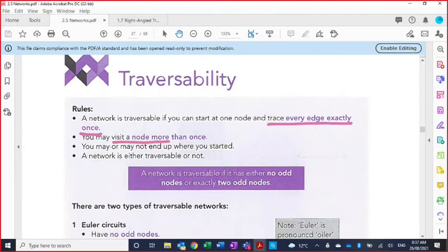Second, you may visit a node more than once. So even though you're only going across the edges one time, you can go through the same node more than one time. Nodes don't matter as far as crossing through them. Next, you may or may not end up where you started. So there are two different types of networks that are traversable. One where you end up where you start, one where you don't. And the final idea is that a network is either traversable or not. You don't get a choice. It either will or will not work. And we'll look at the two rules that will help you decide that.